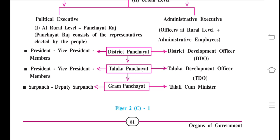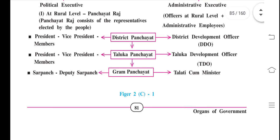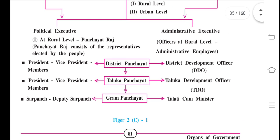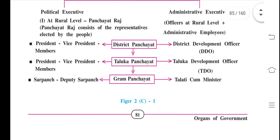At the figures shown, the President, Vice President, and members represent the District Panchayat's elected wing, with the District Development Officer (DDO) as the administrative head. For the Taluka Panchayat, there is also a President, Vice President, and members, with their own officers including the DDO. On the left side is the political executive — the people who carry out the work — and on the right side are the administrative employees who manage written and qualified work.